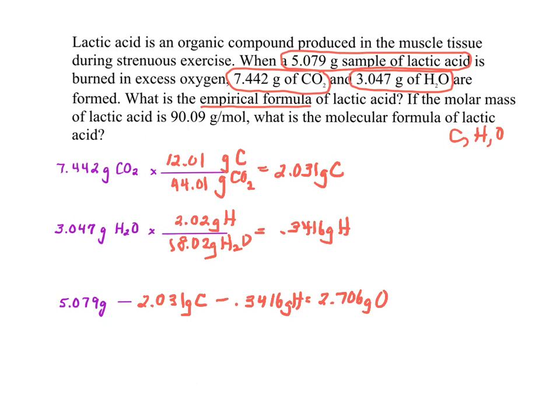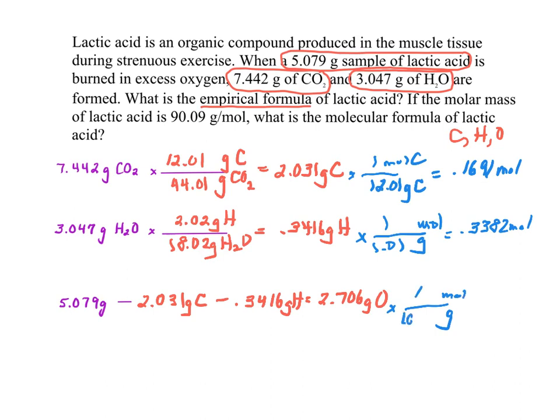Now, this problem is going to be just like the ones we've done. We change grams to moles. So 1 mole of carbon for every 12.01 grams of carbon, and that gives us 0.1691 moles. I'm going to change grams to moles here for the hydrogen. 1 to 1.01. That gives me 0.3382 moles. And same thing for the oxygen. We're going to change grams to moles. 1 to 16.00, and that's 0.1691 moles.